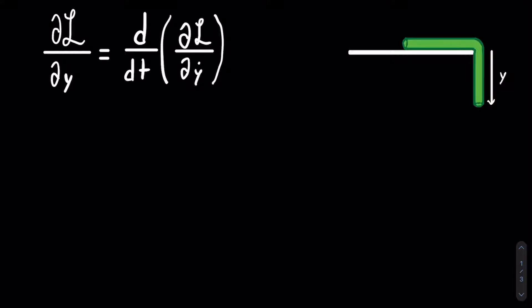The first thing that we need to do is find the equation for the kinetic energy. The equation for kinetic energy is K equals one-half m, which is the mass of the whole rope, times y-dot squared. y-dot is the velocity, or in this case, speed of the end of the rope. However, because everything is connected, the speed of every point is the same.